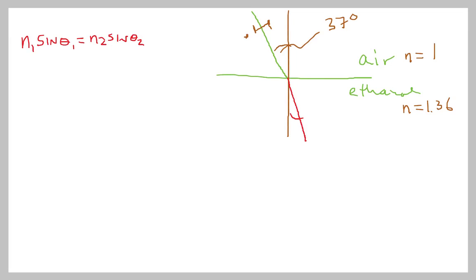And so we'll call the air N1 and we'll call the ethanol N2. This 37 degrees is theta 1. And so what we're looking for here is theta 2. That's this variable here. And so what we can do is rearrange this equation using some algebra to solve for that theta 2. And when we make that solution, we get theta 2 is equal to the arc sine of N1 sine theta 1 divided by N2.